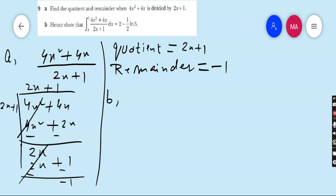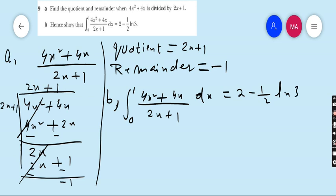Part b: Hence show that integrate 0 to 1, (4x squared plus 4x) upon (2x plus 1) dx equals 2 minus 1 upon 2 ln 3. Focus the word in part b, the first word is hence. Hence means we have to take the help from previous part. We have already divided 4x squared plus 4x upon 2x plus 1.